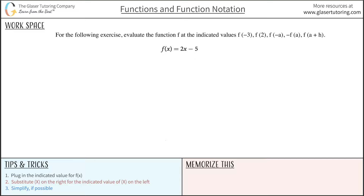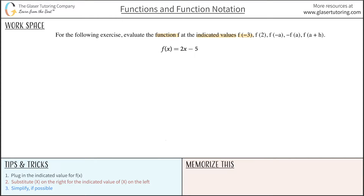For the following exercise, evaluate the function f at the indicated values — f of negative 3. When we're trying to evaluate this particular function for a certain value of f of x, we can follow these three basic steps. The first step would be to simply plug in the indicated value for f of x — substitute out this value of f of x and plug in the indicated value they told us.